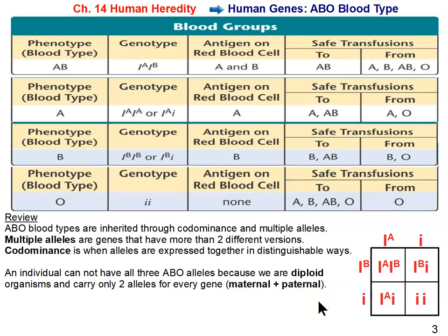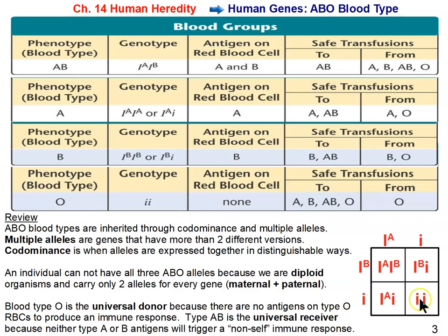When we solve the Punnett square, we see all the different blood types represented: one individual ends up with AB blood, one is heterozygous B just like the parent, two are heterozygous A just like the other parent, and there's a one-quarter chance of having an offspring with blood type O — homozygous recessive, which is the only way to be O. Blood type O doesn't have any antigens on red blood cells — neither the A protein nor the B protein — so type O can be given to anybody.